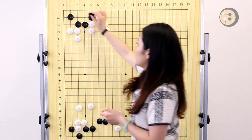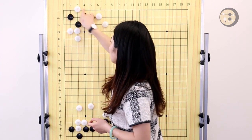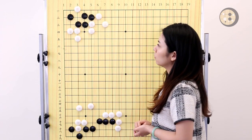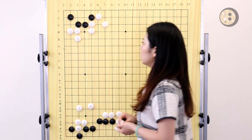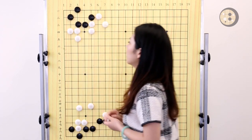And then black is going to hane and white blocks. The next move is also important. If you just simply connect, that doesn't work because the shape in the corner is a pyramid four. Now it's dead. So now you need to find the vital point.